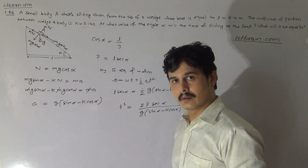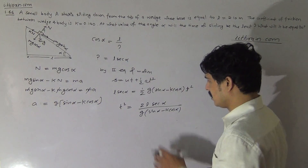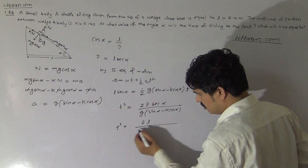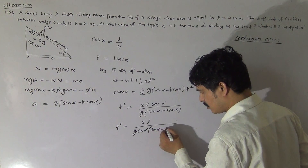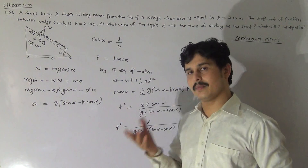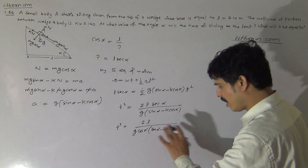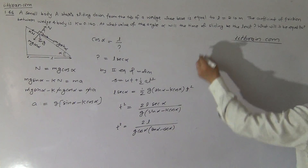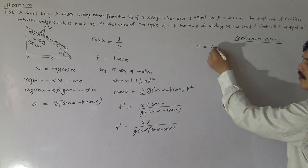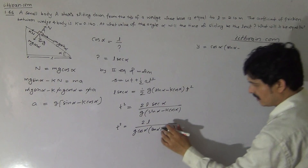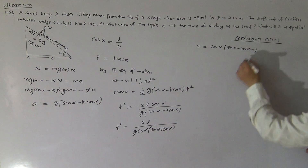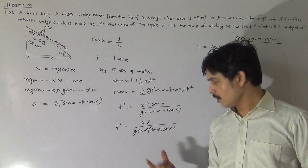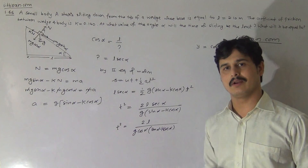Rearranging, T squared equals 2L sec alpha divided by G(sin alpha minus K cos alpha), which can be written as T squared equals 2L over G times cos alpha over (sin alpha minus K cos alpha). For T to be least, the denominator — which is cos alpha times (sin alpha minus K cos alpha) — must be greatest. So we need to find the maximum of this expression.